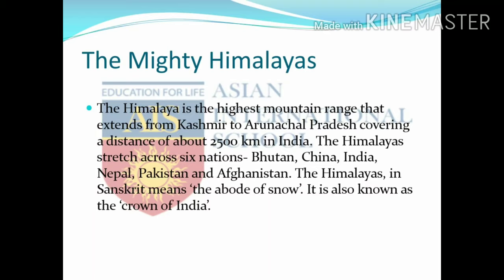The Himalayas stretch across six nations: Bhutan, China, India, Nepal, Pakistan and Afghanistan. The Himalayas in Sanskrit means the abode of snow. It is also known as the crown of India, as it is located in the northernmost part of our country.